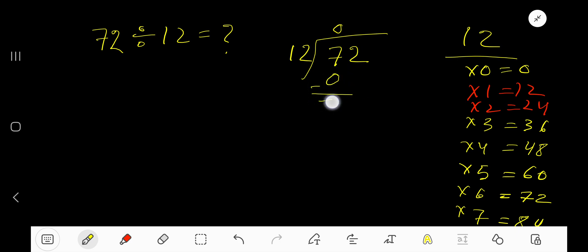Subtract 0, bring down this digit to get 72. 12 goes into 72 how many times?